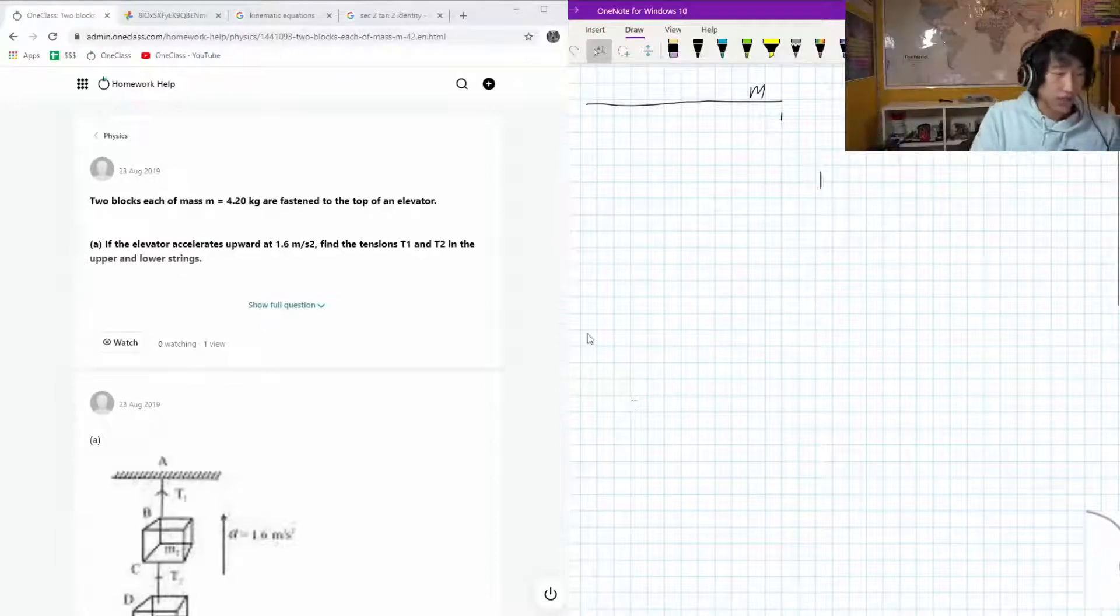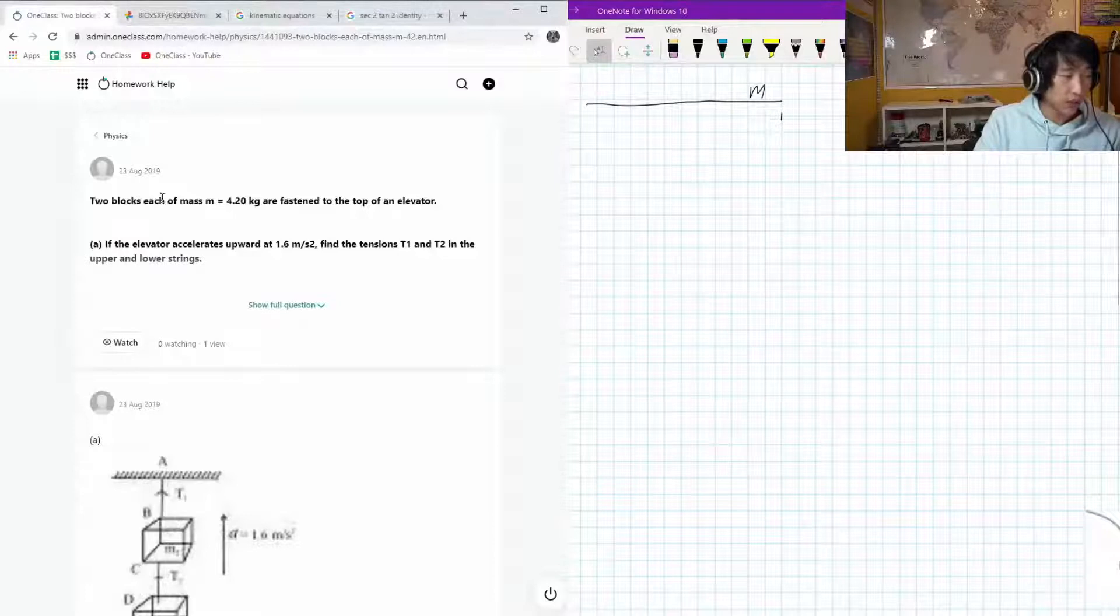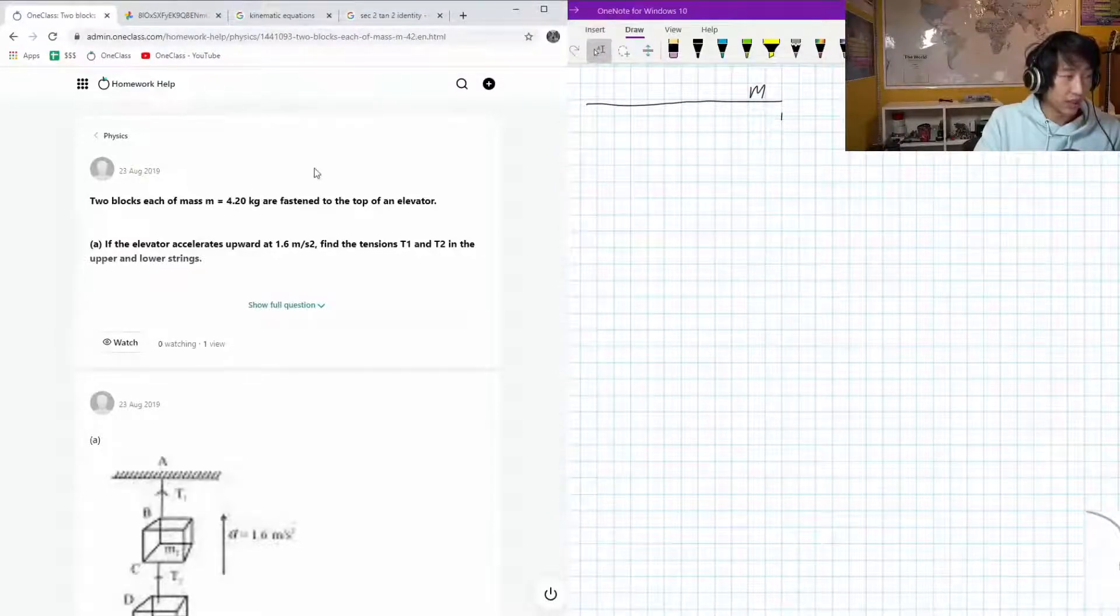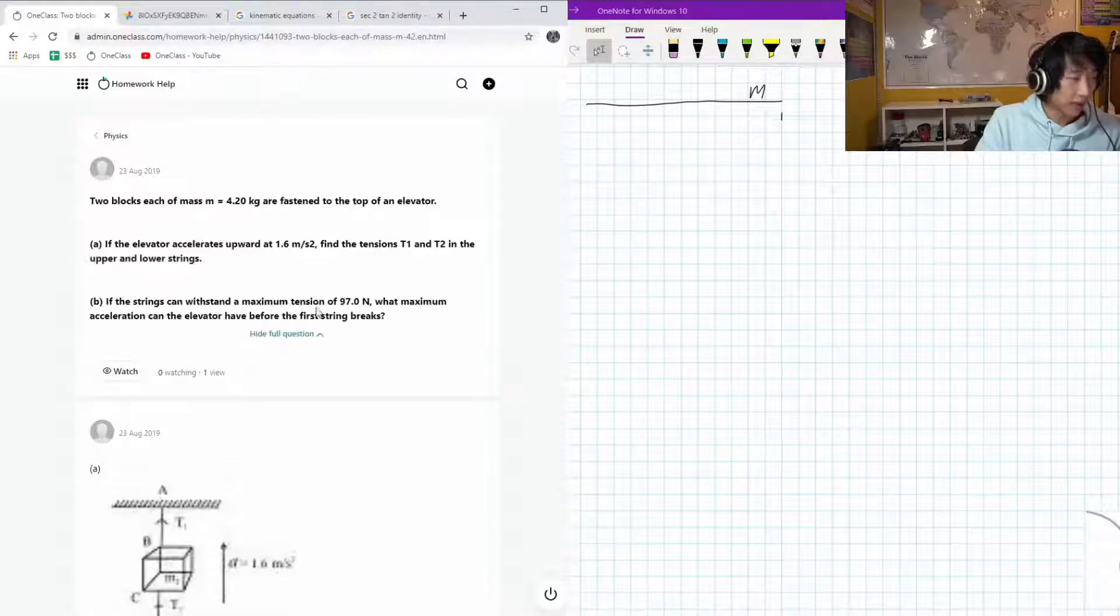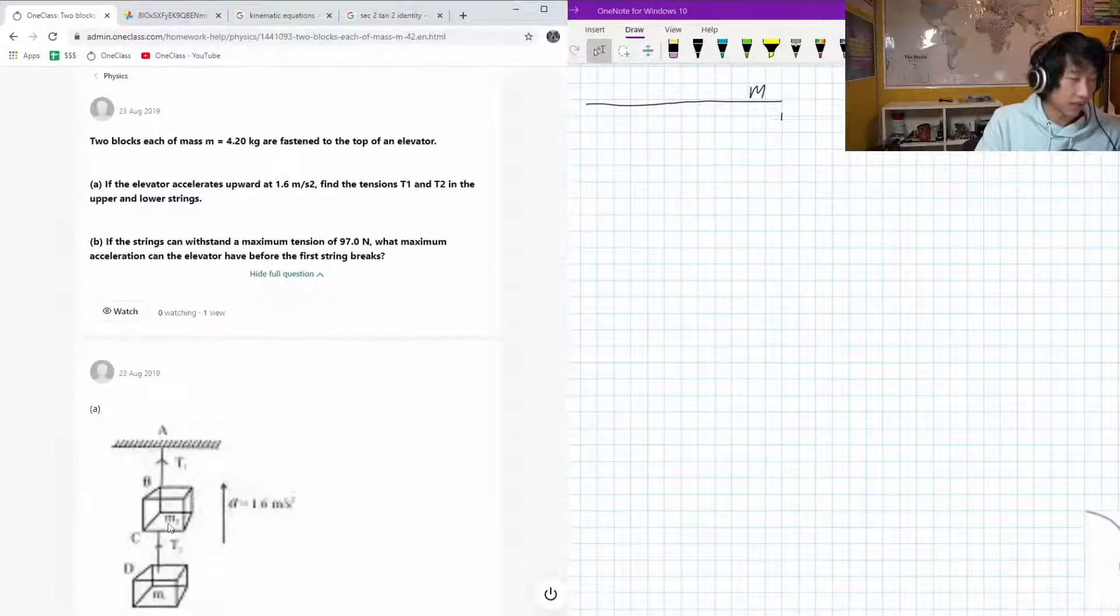Okay, so for the next question on the menu today, we have the situation where we have two blocks, each with a mass of 4.20 kilograms. Nice. They are fastened to an elevator. If the elevator accelerates up at 1.6 meters per second squared, find the tensions in the two different cables that are supported.